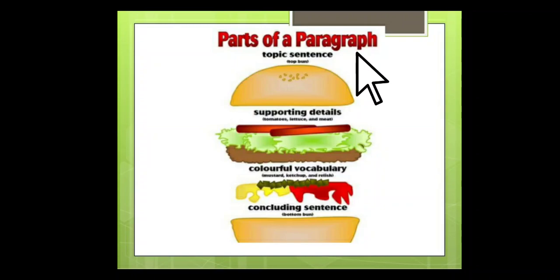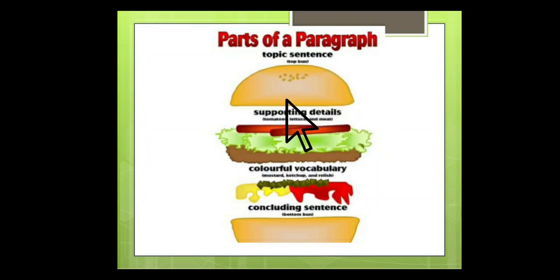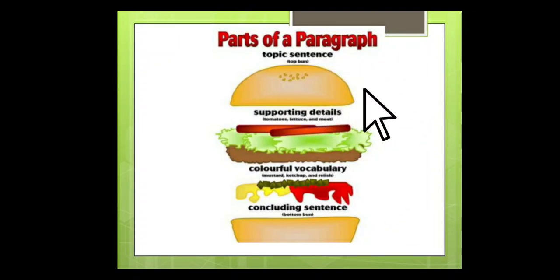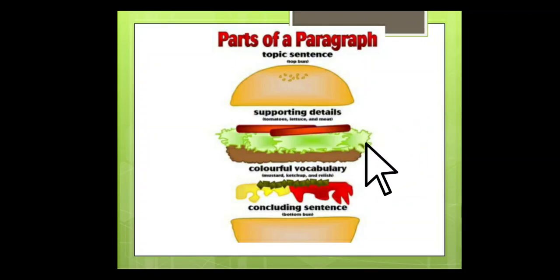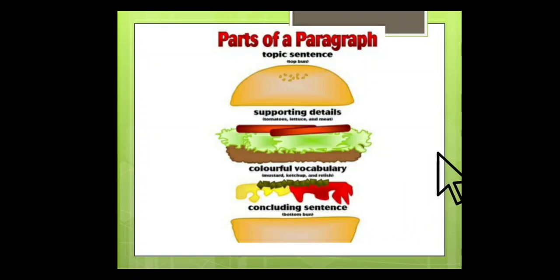Number one is the topic sentence, which is at the top of the paragraph. The second is supporting details. We should add good vocabulary, check spelling, and use full stop, comma, sign of interrogation, exclamation, colon, and semicolon — all these things we should keep in check for that particular paragraph.